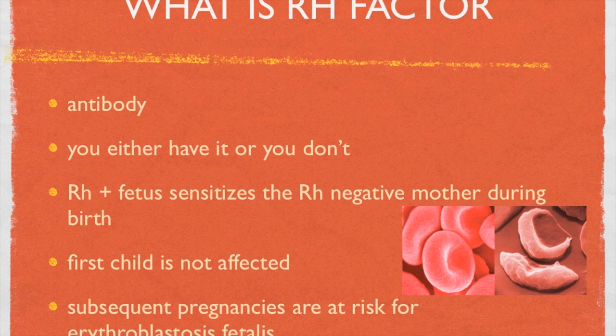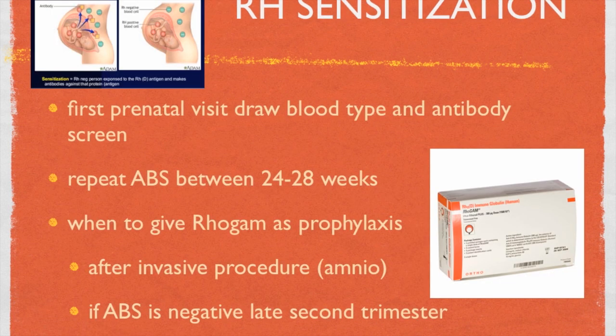Students often confuse the RH as the antibody test, and it isn't. It's just telling us yes, you're RH positive, or no, you're not. But the antibody screen is going to indicate that somebody is sensitized. There are a lot more blood antibodies than simply the RH, and it may not be against the RH — it may be something else. Some of them are lethal, but many of them are okay. But we're going to stick with the RH incompatibility related to sensitization for this lecture.